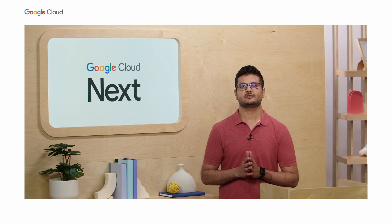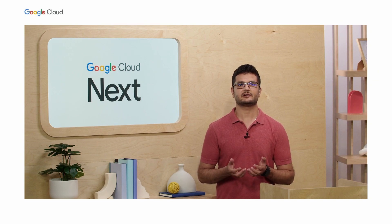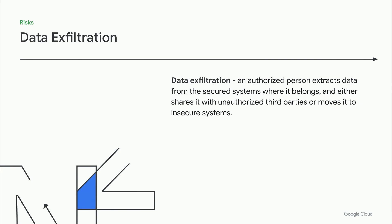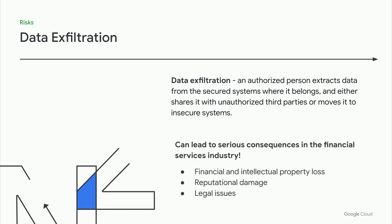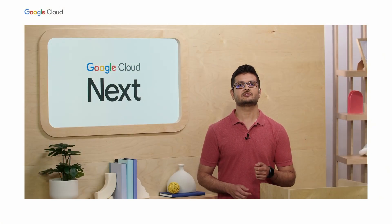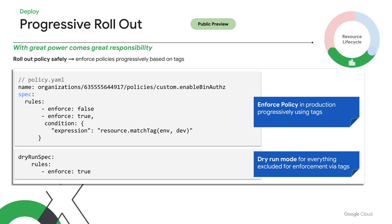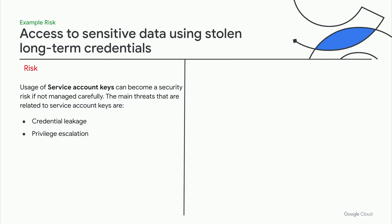One of the biggest macro risks across the firm for migrating data to the cloud is data exfiltration. Data exfiltration is when an authorized person extracts data from secured systems where it belongs and either shares it with unauthorized third parties or moves it to insecure systems. This can lead to serious consequences like financial and intellectual property loss, reputational damage, and legal issues. Let's identify some specific data exfiltration-related risks and how we mitigate them using the security tools mentioned earlier.